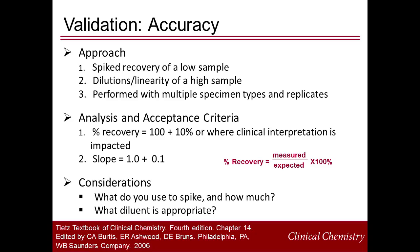The recommended approach to establishing accuracy in a body fluid validation experiment is to perform two experiments: spiked recovery in a low sample and dilution of a high sample. These experiments should be performed for multiple sample types, chosen to reflect those received most frequently for the test being validated. Each fluid should be tested in triplicate at minimum to verify reproducibility. Calculate percent recovery using the ratio of measured over expected.